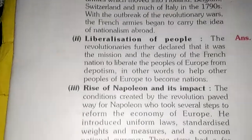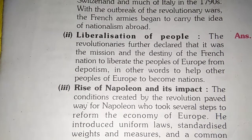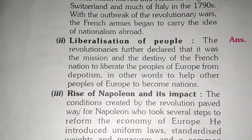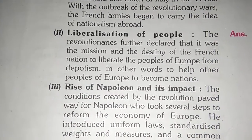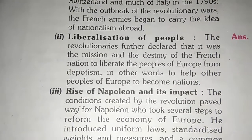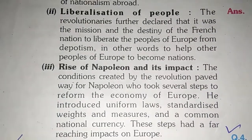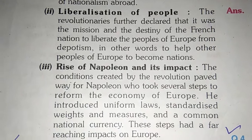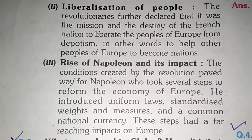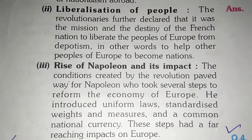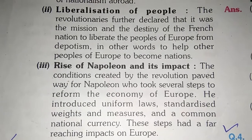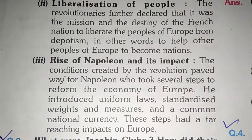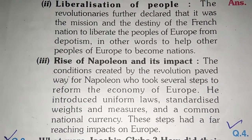The second part is the liberalism of people. The main aim was to create unity between Europe and France. Next is the rise of Napoleon and its impact — when Napoleon took many steps to reform the economy in Europe, starting different laws which had different effects across Europe.